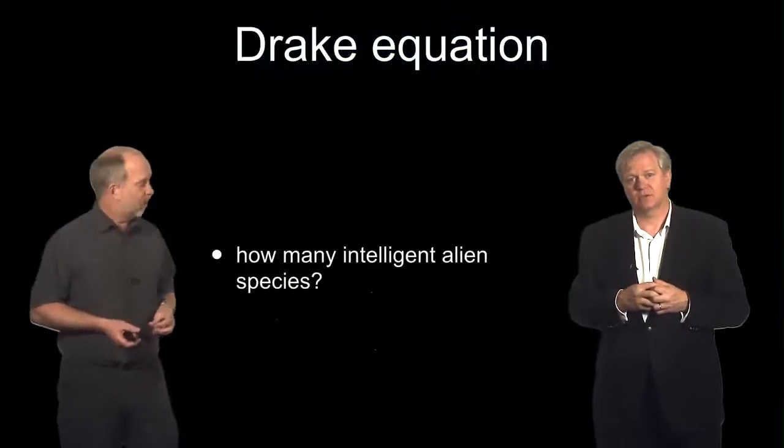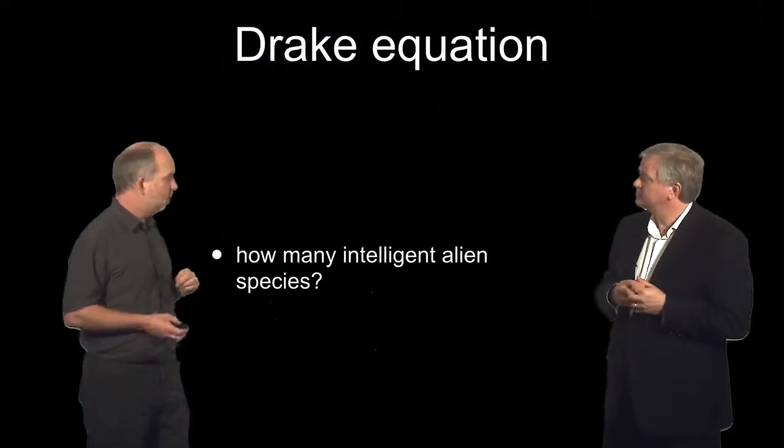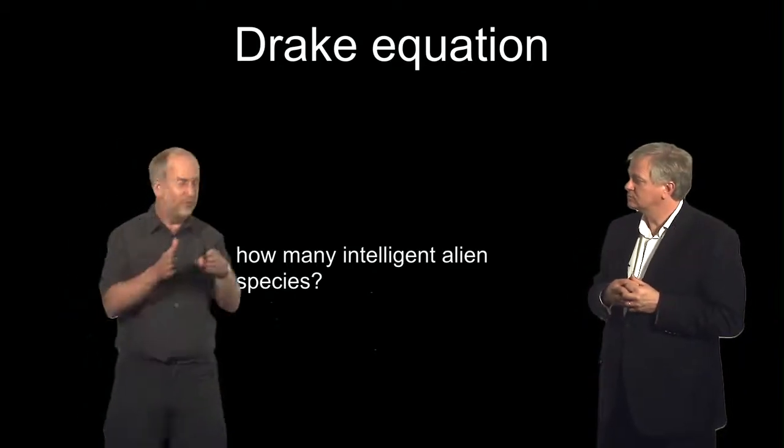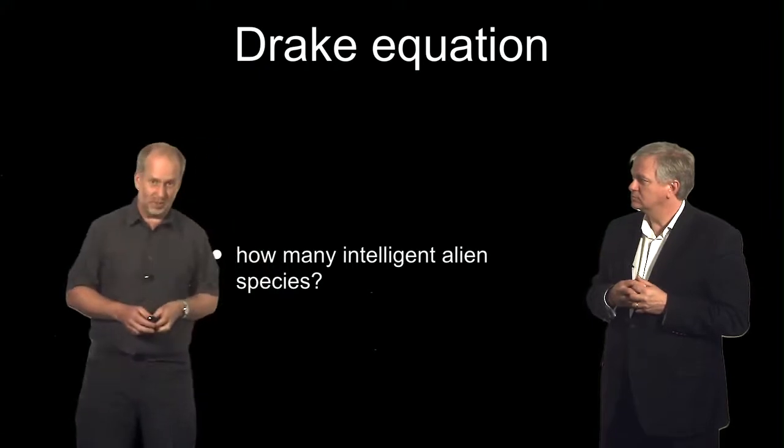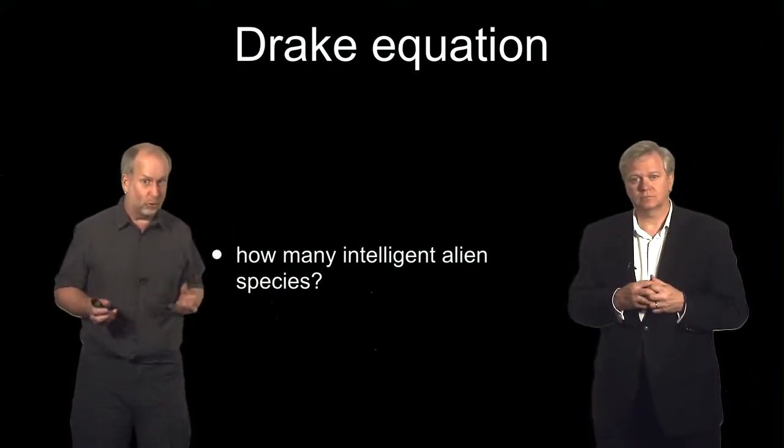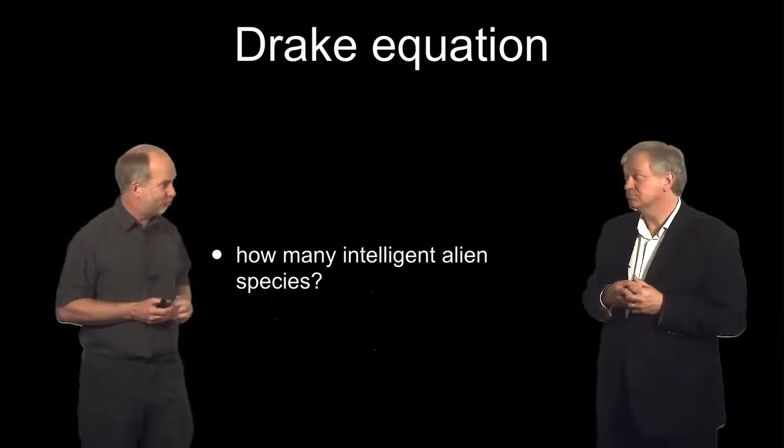So the normal way this is done is what's called the Drake equation, which is an attempt to not answer the question, is there life in space, but at least break down all the different uncertainties and stack them out so we can see them. I should make it clear that this is a very speculative part of the course. We really don't know most of these things.